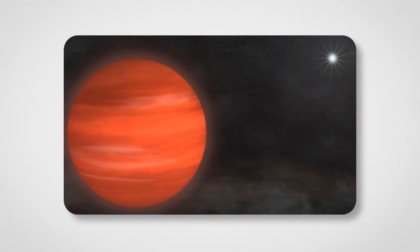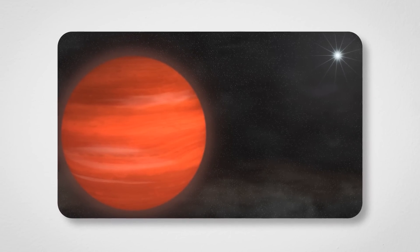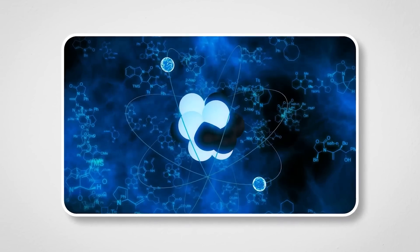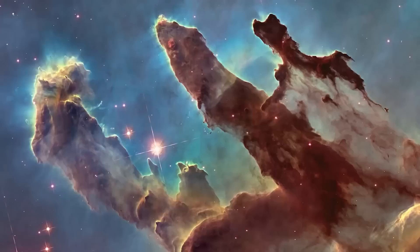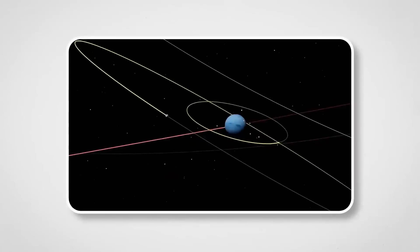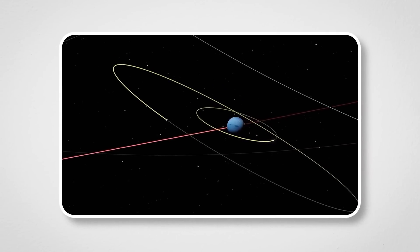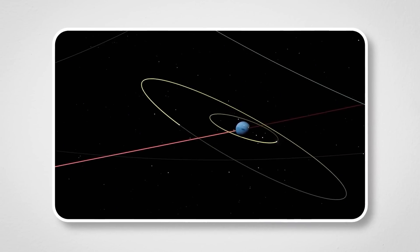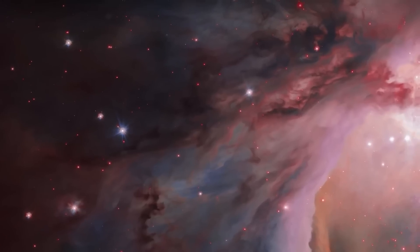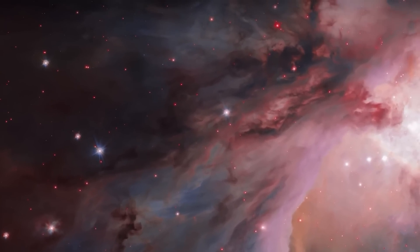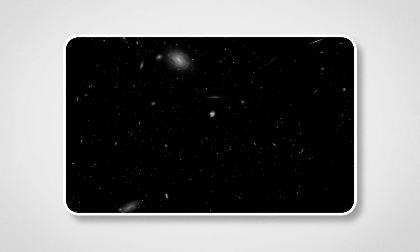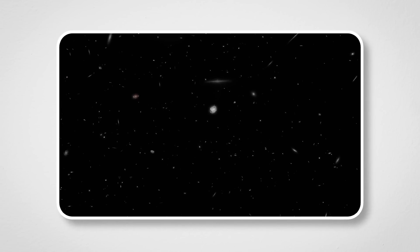One of the standout details about Gliese 504b is its temperature. At around 800 degrees Fahrenheit, it's a scorching environment by human standards. However, for a gas giant of its youth, this temperature is relatively cool. Scientists are intrigued by how such a massive planet could cool off so quickly. Some are speculating that its unusual pink glow might hold the answer. The coloration is tied to the heat radiating from its atmosphere and how that heat interacts with light, a phenomenon that could offer fresh insights into planetary physics.